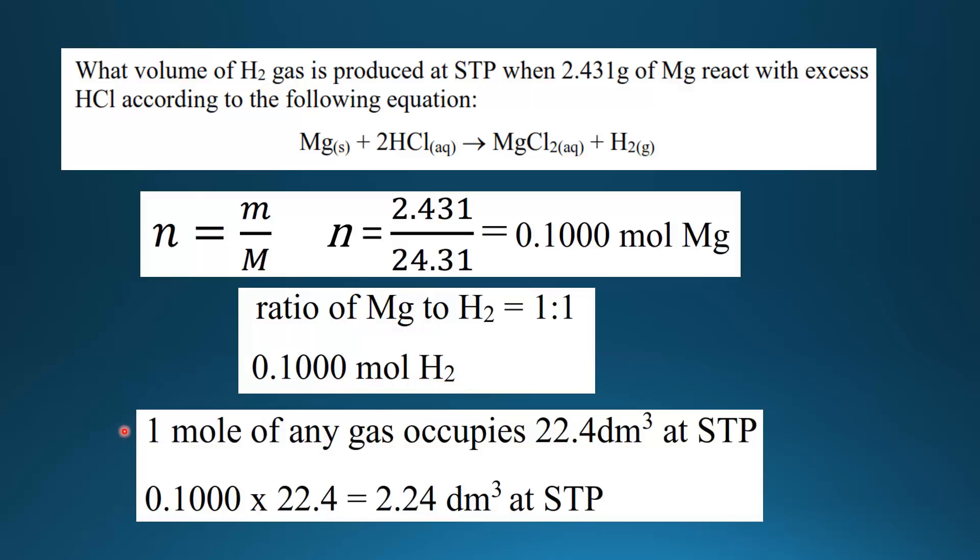Finally, we know that 1 mole of any gas occupies 22.4 decimeters cubed at STP. This is the molar volume of a gas. So the final step is to multiply the number of moles of hydrogen gas, which is 0.1000, times the molar volume of a gas, which is 22.4 decimeters cubed, and that equals 2.24 decimeters cubed at STP.